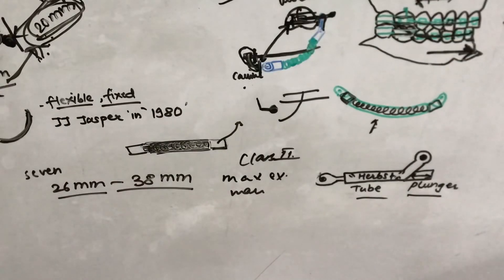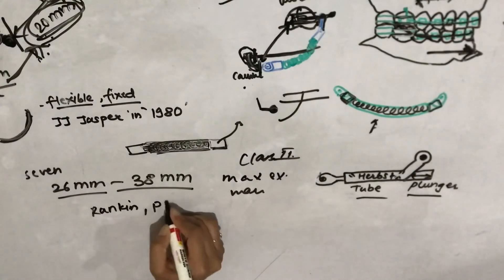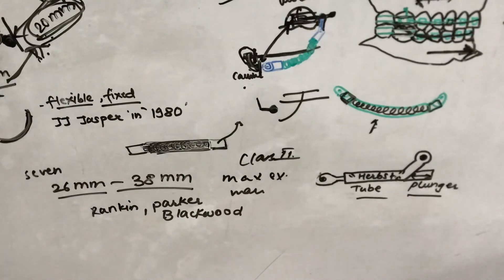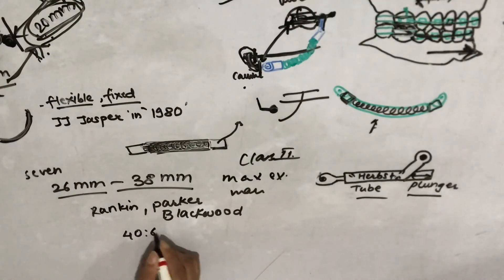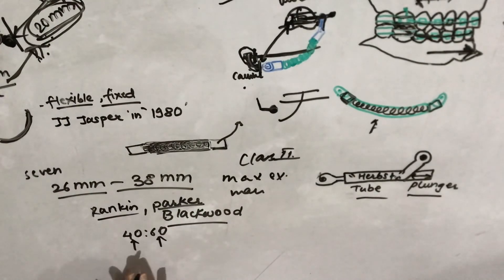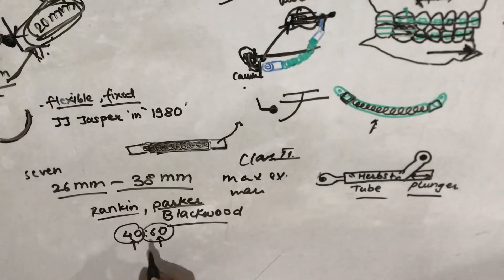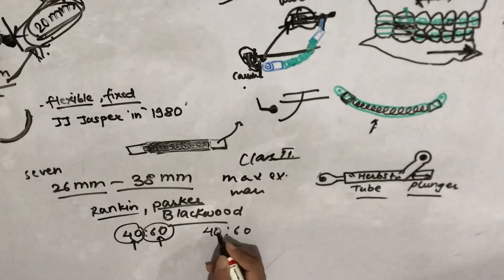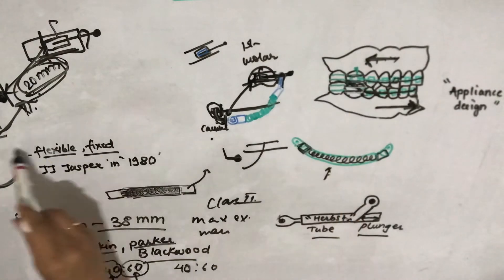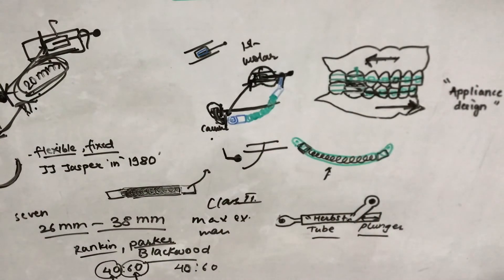According to Rankin, Parker, and Blackwood, the Jasper Jumper brings both dental and skeletal changes in a ratio of 40:60 — 40% skeletal changes and 60% dental alveolar changes. The skeletal effects include: distal displacement of the maxilla, a small distal shift of Point A, clockwise rotation of the mandible, and forward condyle movement.